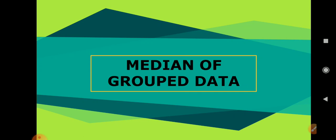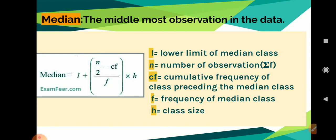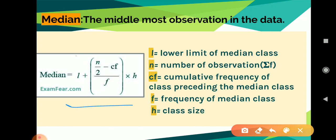Today, let us go to the median. How to find the median of grouped data? As you all know, median is the middlemost observation in the data. In 9th standard, we were given ungrouped data — we arranged them in increasing or decreasing order and marked the middlemost term. But in 10th standard, we have one formula to find the median, similar to the mode formula. Median is equal to L plus (n by 2 minus cf) divided by f, into h.